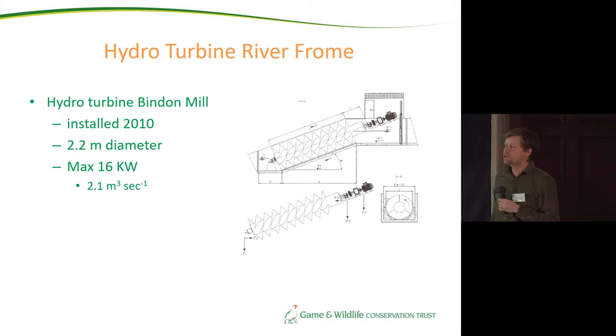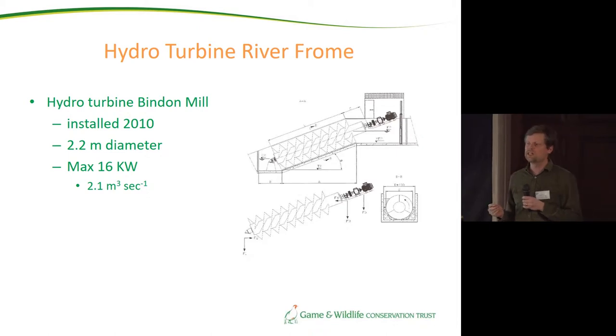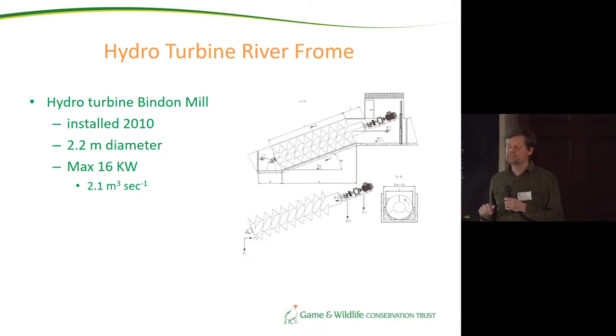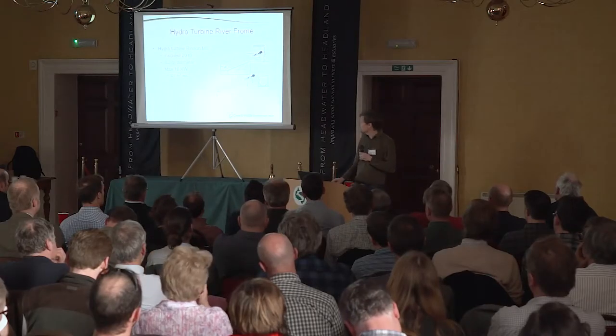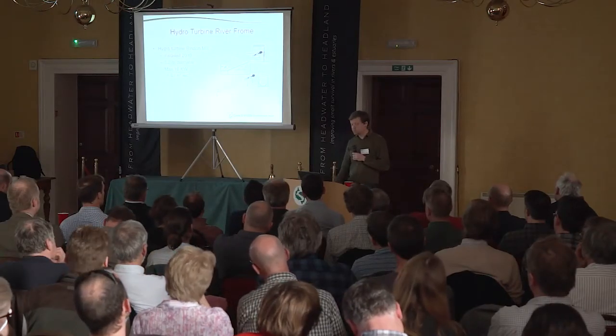To put that into perspective, if it were producing at maximum capacity throughout the year, that would be equivalent to the electricity consumption of about 30 to 40 houses in the UK. Even in a relatively stable flow regime like a chalk stream, it's not running at max capacity all the time — at times there's not enough water to run at all, and at times there's actually too much water for it to run.